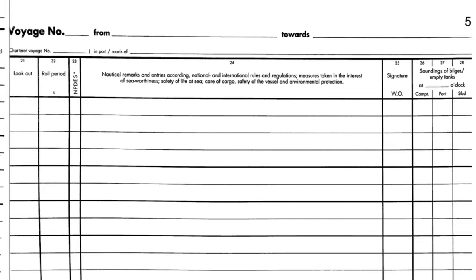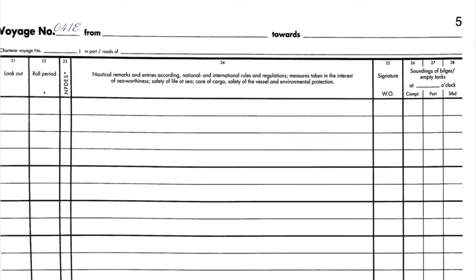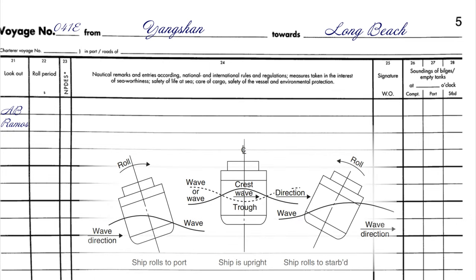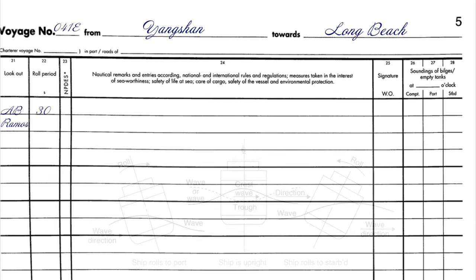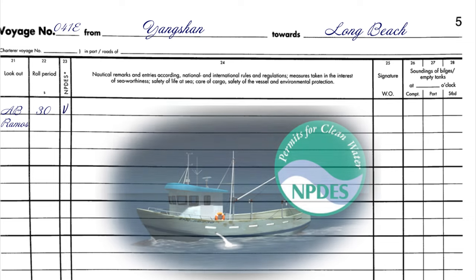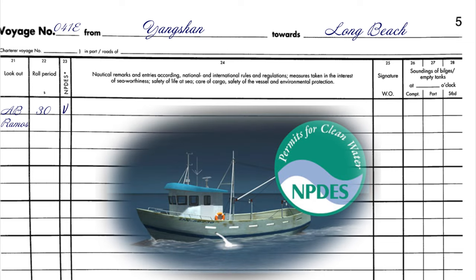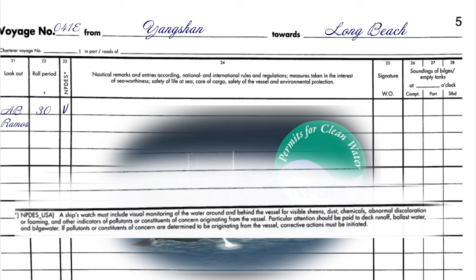On another page of the deck log book you have to fill in voyage number, the port the vessel is going from, and the port it is going to. Lookout — you should write down the name of your duty AB. Roll period. NPDS — National Pollution Discharge and Elimination System vessel general permit — if you are in US waters, it should be noted that appropriate checks have been carried out. These are indicated at the bottom of the page.